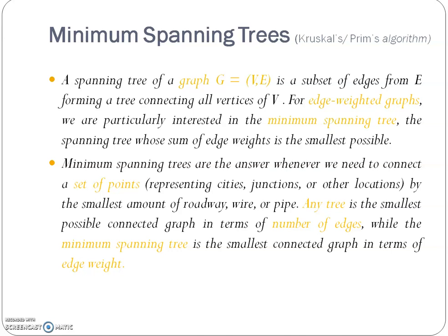In the spanning tree, we are interested to find out how to connect a number of points — which may represent cities, junctions, or other locations — where the smallest amount of roadways, wires, or pipes are going to be connected between the cities and junctions. It is not only limited to cities and junctions; we can also find minimum networks, minimum flow within programs, and minimum sequences of statements using the minimum spanning tree.